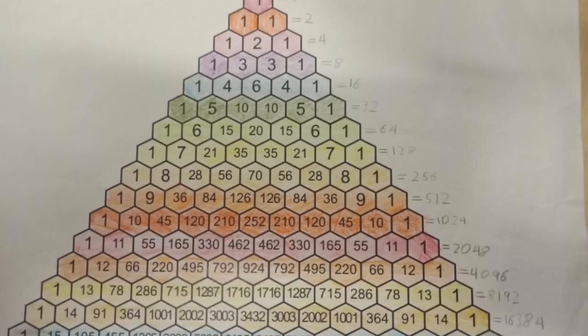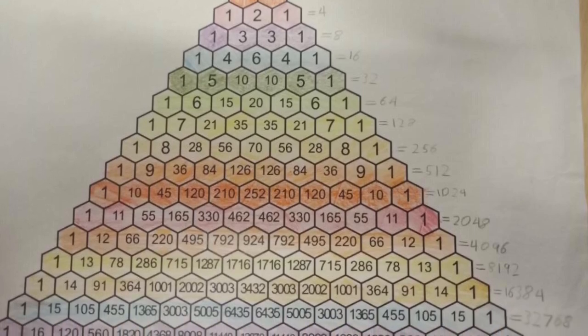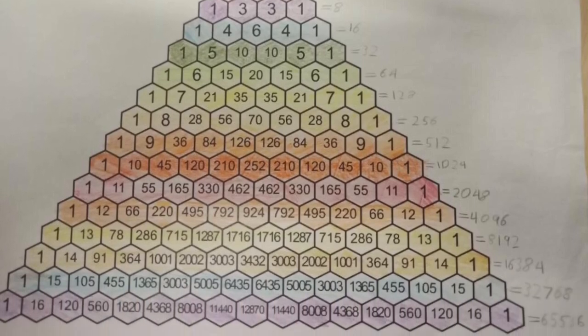In the second pattern we can see that each row of Pascal's Triangle doubles the previous row, also referred to as powers of two.